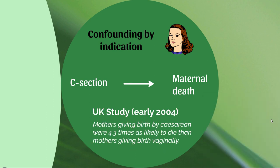The 2004 study found that mothers who gave birth by cesarean section were 4.3 times as likely to die in childbirth than those who didn't. Without considering confounding, you might think cesarean sections cause a huge spike in risk. But in reality, cesarean sections very likely save many lives when the mother's life is on the line. This confounding by indication makes the relationship very difficult to study — which is really the conclusion of that paper.